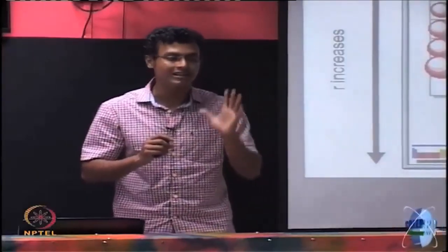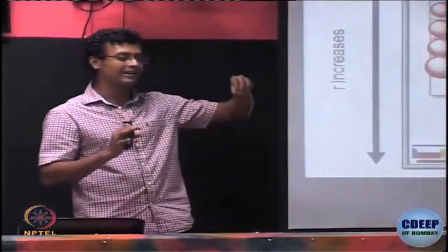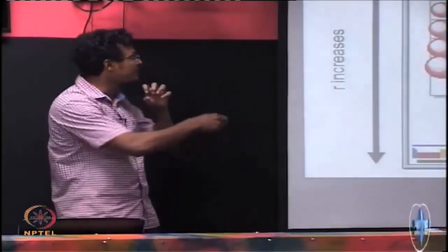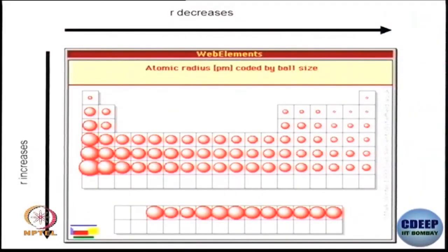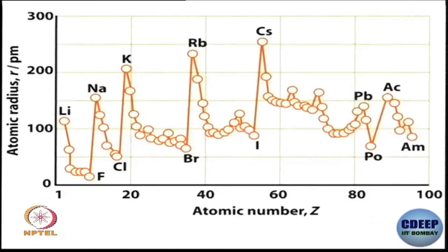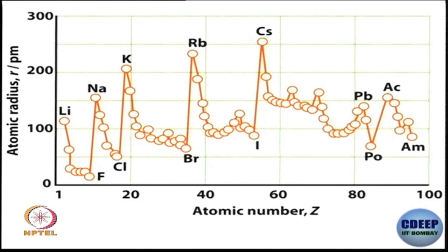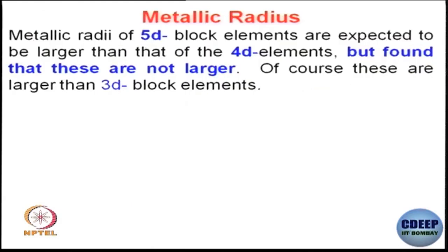From left to right, it is the same principal shell where electrons are being added again and again. The penetration — or the neutralization of positive charge by these electrons — is not that much, so effective nuclear charge keeps increasing and overall size decreases from left to right. This is shown in the atomic number versus atomic radius plot: from left to right size decreases, and going down the group — lithium, sodium, potassium, rubidium, cesium — size increases dramatically.